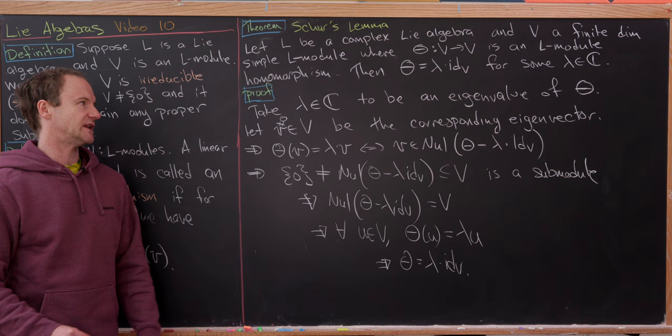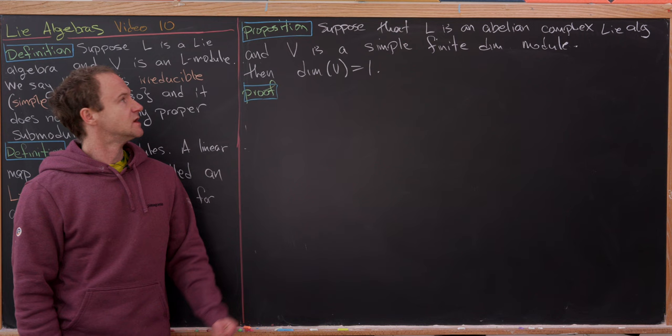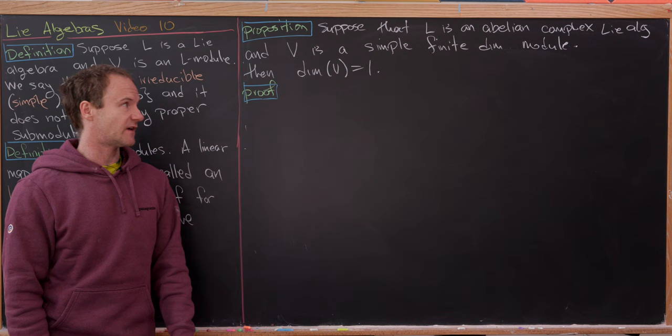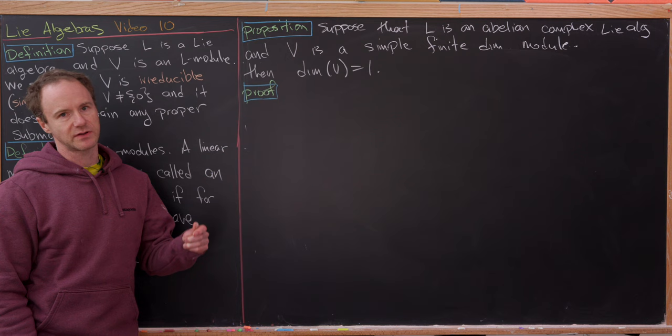Next, an important corollary: suppose L is a complex abelian Lie algebra (bracket identically zero) and V is a simple finite-dimensional L-module. Then dim(V) = 1. So all simple modules of complex abelian Lie algebras are one-dimensional.